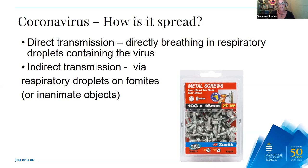In infection control terms, we call the packet of screws a fomite — an inanimate object that is capable of harbouring an infectious agent long enough for it to be transmitted. Just as a side note: while some people experience diarrhoea as part of their symptoms, there is yet no real evidence that shows COVID-19 is spread through feces, urine, or blood.